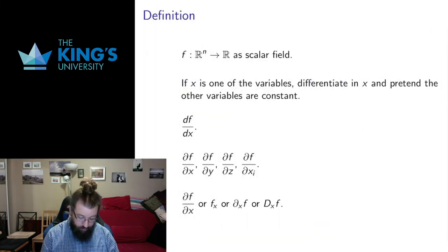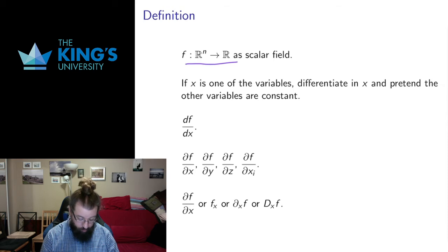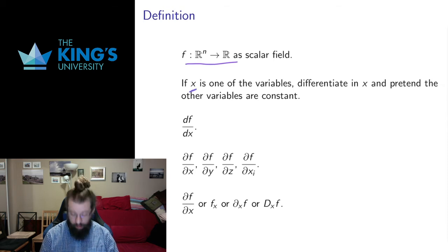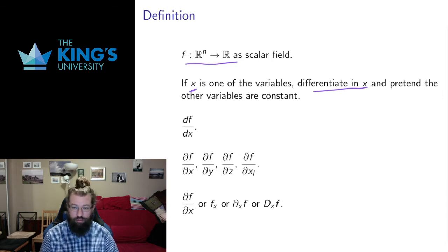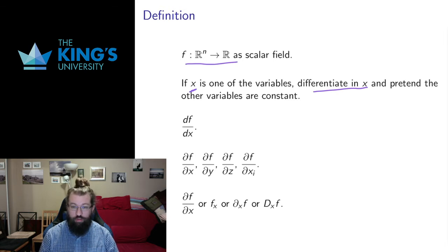So let's define what we mean here. We have some scalar field. The partial derivative is what happens if we take one of the variables — let me call it x for now — and we differentiate in that variable pretending that everything else is a constant. That means we can do ordinary single variable derivatives. There are no new derivative rules. It's all exactly the same as it was before; we just pretend the other variables are constant.